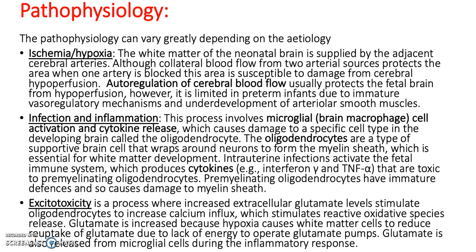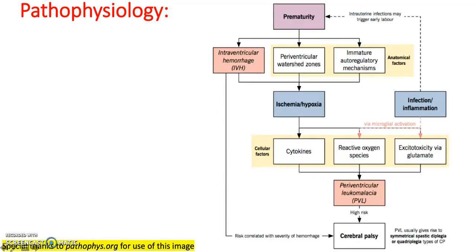Excitotoxicity is a process where increased extracellular glutamate levels stimulate oligodendrocytes to increase calcium influx, which stimulates reactive oxidative species release. Glutamate is increased because hypoxia causes white matter cells to reduce reuptake of glutamate due to lack of energy to operate glutamate pumps. Glutamate is also released from microglial cells during the inflammatory response. Here you can see a flowchart which talks about some of the main causes of these factors.